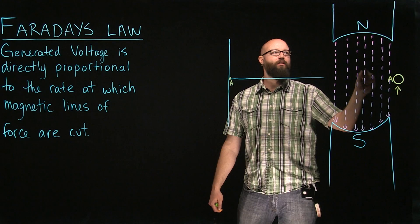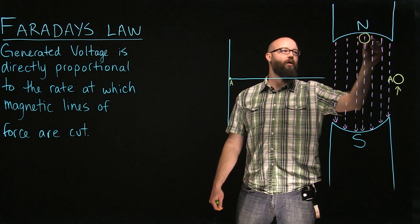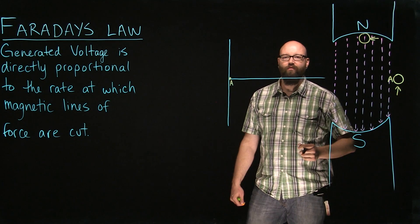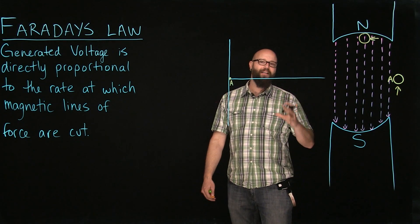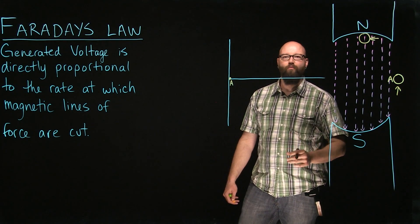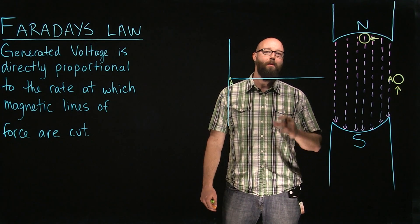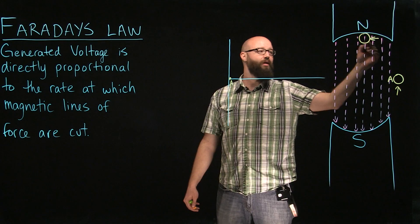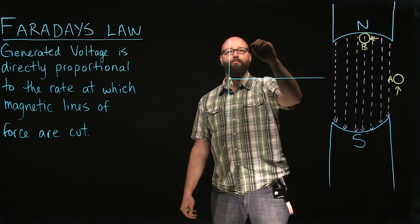Now, let's rotate our conductor 90 degrees. So our conductor is now moving at a 90 degree angle towards those lines of flux or at a right angle. We are cutting the maximum amount of lines of force right now, so we should see maximum generated voltage. We're going to plot that over here. Point B, we're going to call this point B. Let's put that right here.